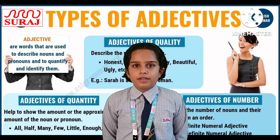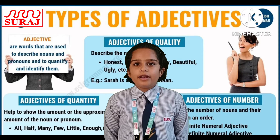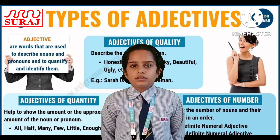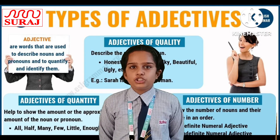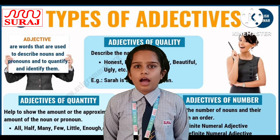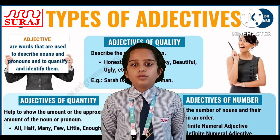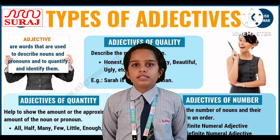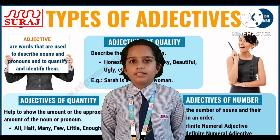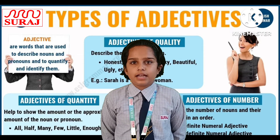Fifth, interrogative adjective. An interrogative adjective is used to ask a question, placed before a noun. Example: Whose book is this? — 'whose' is the interrogative adjective. What type is it? — 'what' is the interrogative adjective.